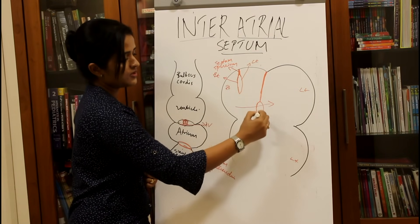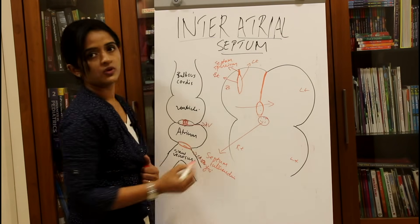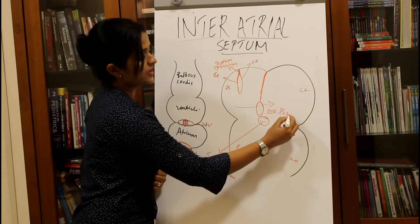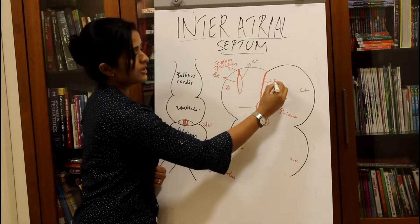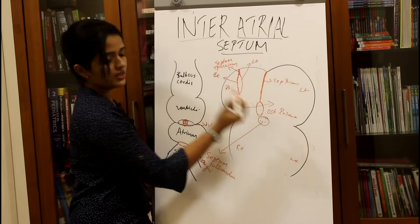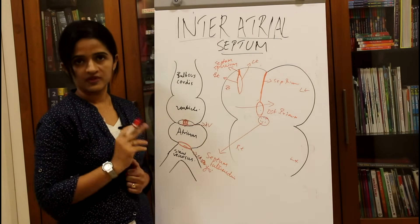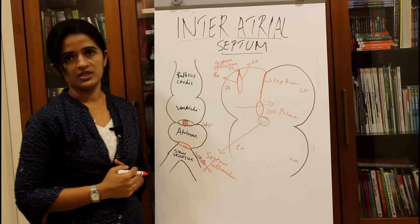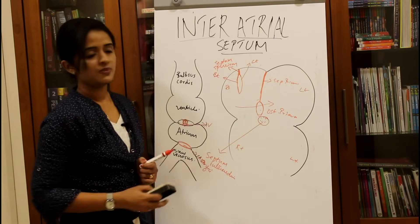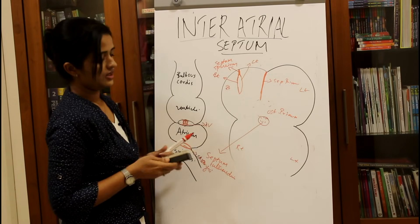Before the septum primum meets the septum intermedium, there is a gap in the lower aspect. This first formed orifice is called the ostium primum. The first formed septum is called septum primum, and the first formed ostium in its lower aspect is called ostium primum. Later, as the septum primum approaches the septum intermedium, ostium primum will close.